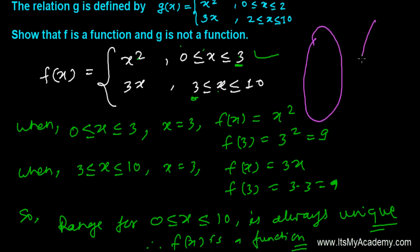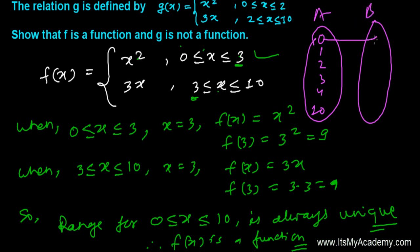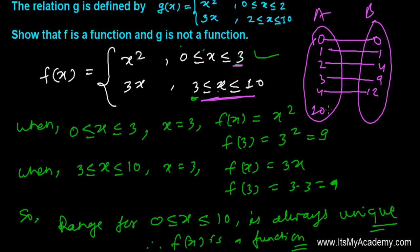You can further verify by taking any number from 0 to 10: putting 0 gives 0, 1 gives 1, 2 gives 4, 3 gives 9, 4 gives 12, and 10 gives 30. Every individual input has one unique image, so this confirms f(x) is a function.